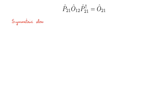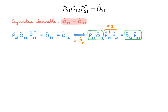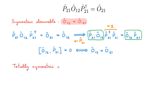We are now ready to define symmetric observables. A symmetric observable is one for which O12 equals O21. This is equivalent to saying it commutes with the permutation operator. To see this: the action of P21 on O12 gives O21; if the observable is symmetric, this equals O12; multiplying by P21 from the right on both sides and using unitarity of P21, we get P21 O12 equals O12 P21. We can generalize to N particles: a totally symmetric observable is one that commutes with all permutations.